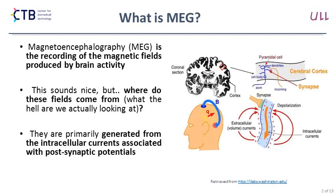These fields are primarily generated from the intracellular currents associated with post-synaptic potentials. Looking at a coronal section, we have a part of the neocortex with dendritic spines, and due to post-synaptic potentials the current flows from the terminal. Associated with this current, as is well known from electromagnetics, there is a magnetic field that might be recorded outside the scalp.